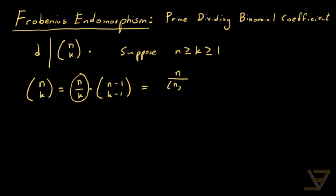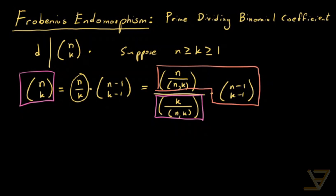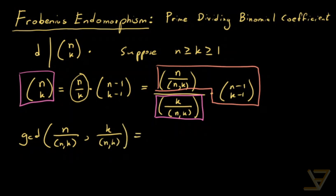We get n over GCD of n and k — dropping the GCD notation here — divided by k over GCD of n and k, multiplied by n minus 1 choose k minus 1. Notice that this is equal to an integer, which is n choose k. So that means that this denominator has to divide the product of these two. But the numerator and the denominator are co-prime, meaning GCD of (n over GCD(n,k)) and (k over GCD(n,k)) equals 1.